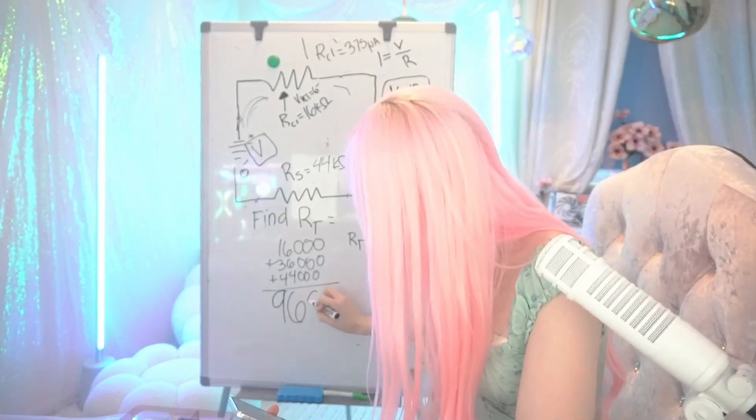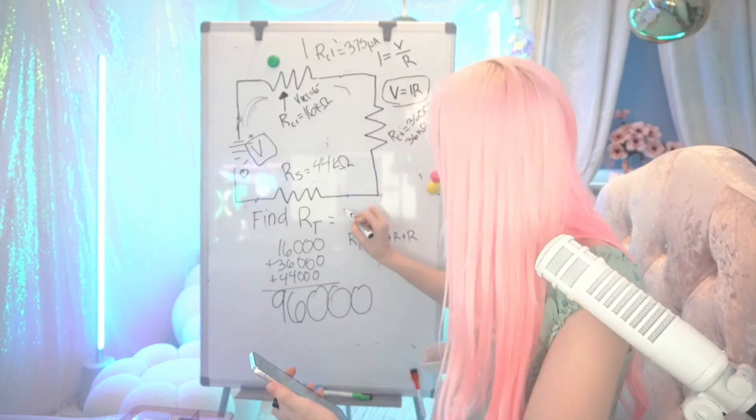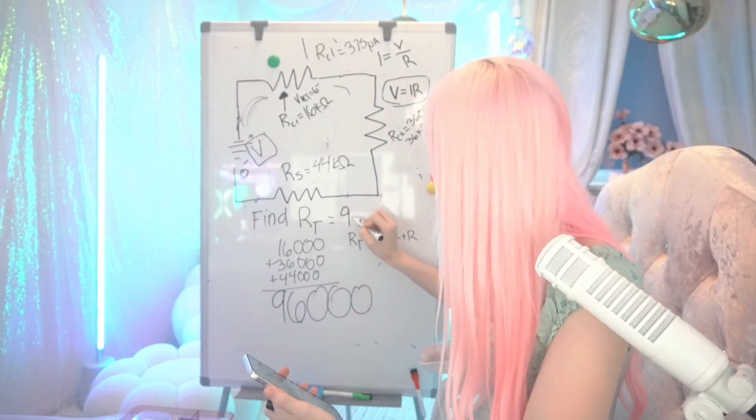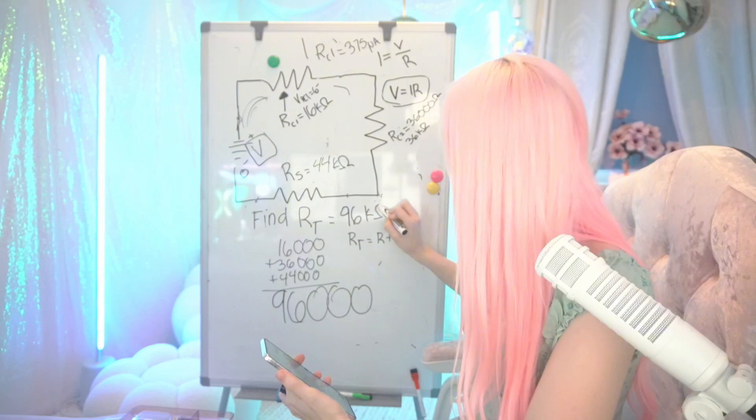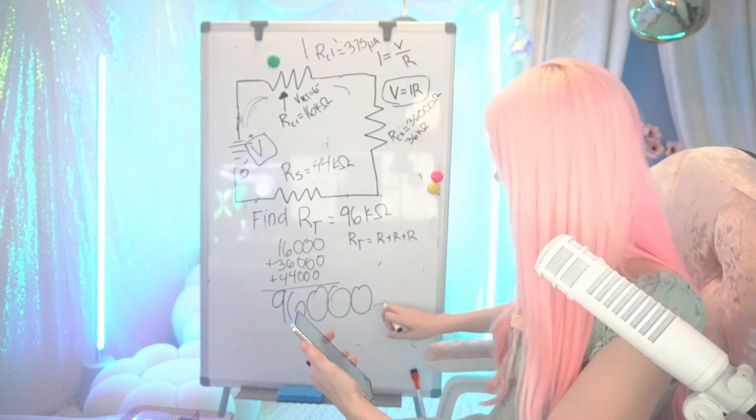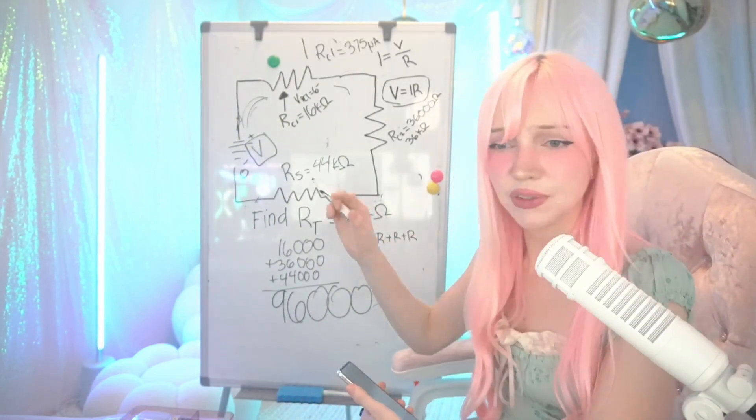96,000 is our total R, total resistance. So we're going to call it kilo ohms. So this is in ohms, and this is kilo ohms, so it looks a little smaller.